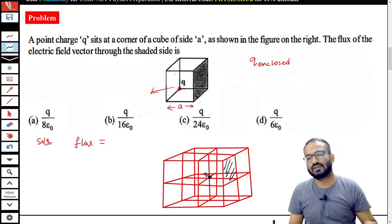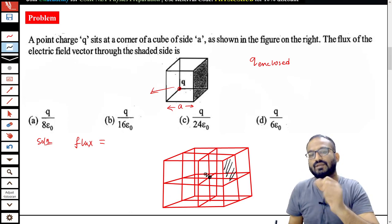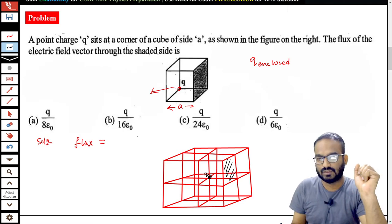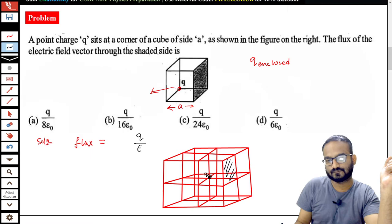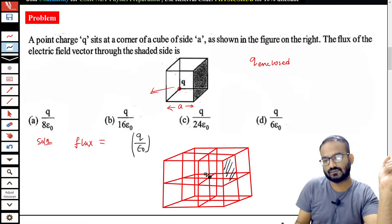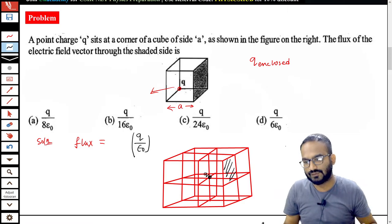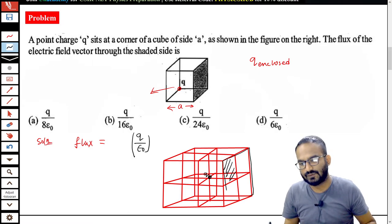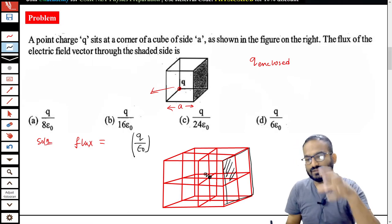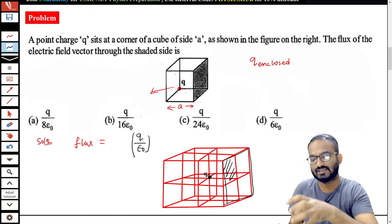First of all, tell me what is the total flux coming out of this big cube? That will be Q enclosed by epsilon naught. This is the total flux coming out of this whole big cube. Now if you consider only one surface, one face, let's say this face. This is like 1/6 of the total surface.